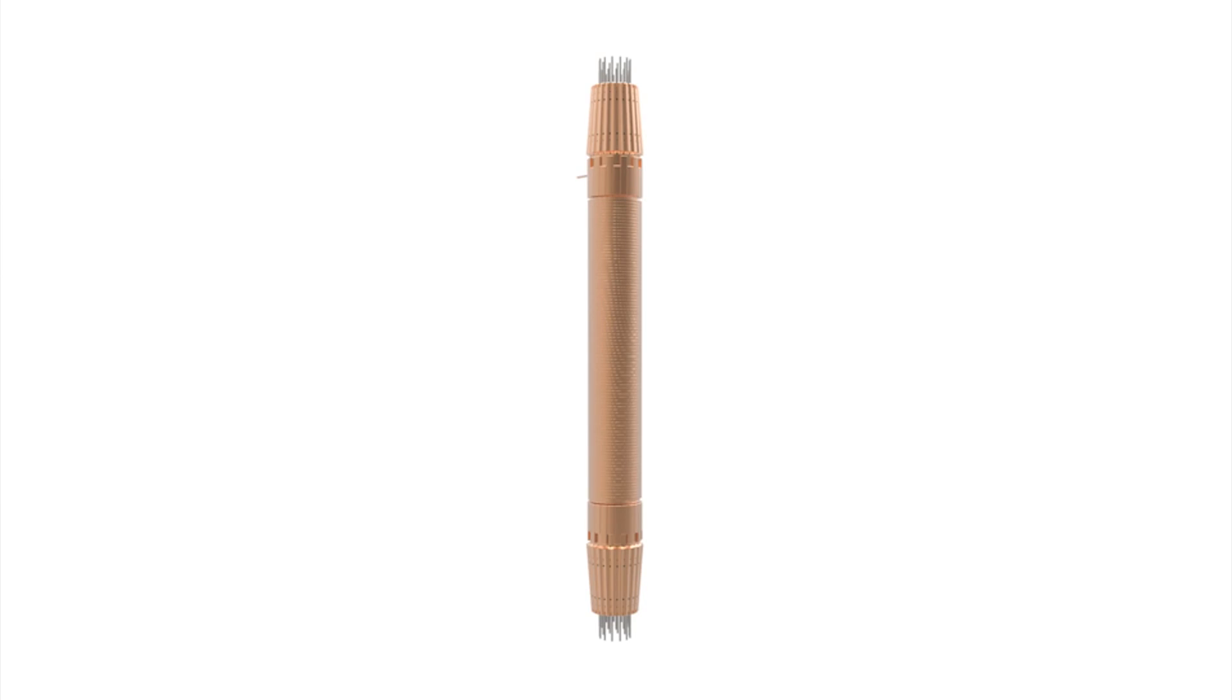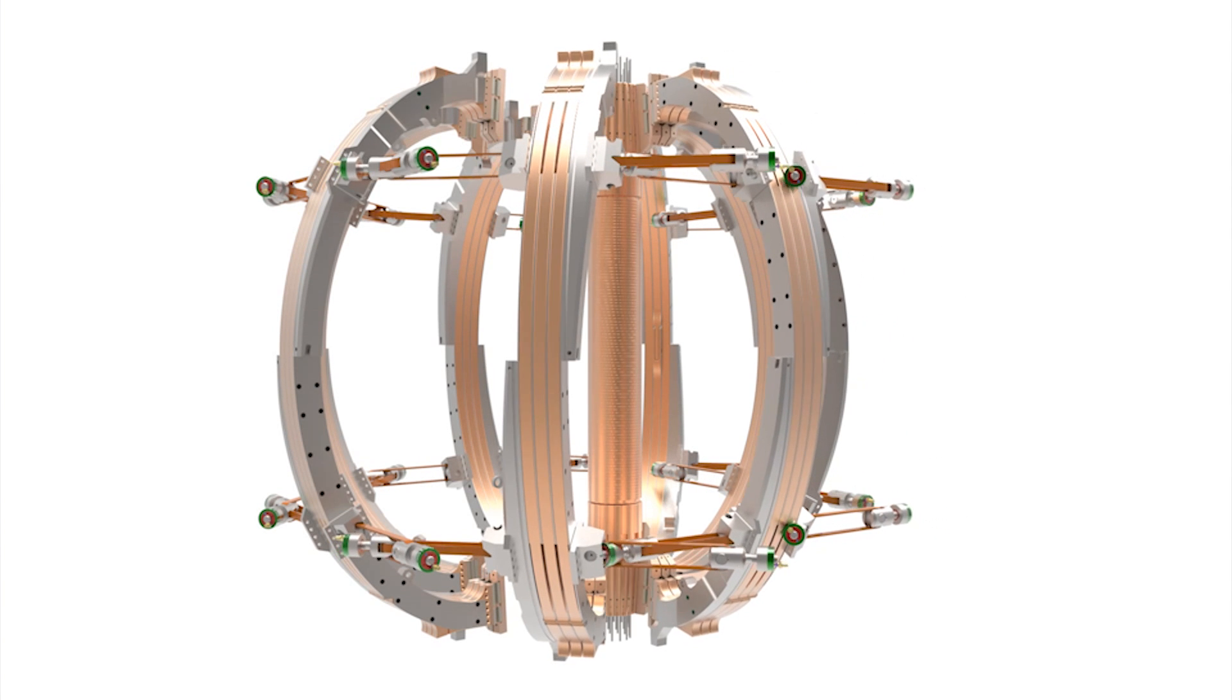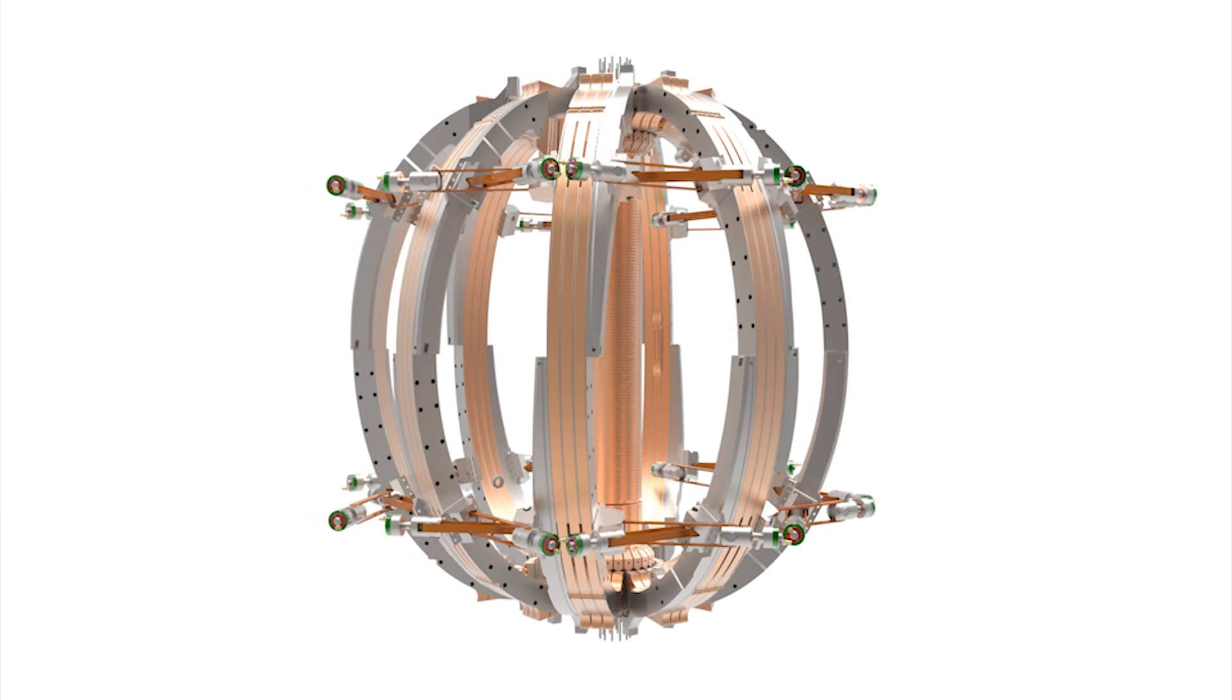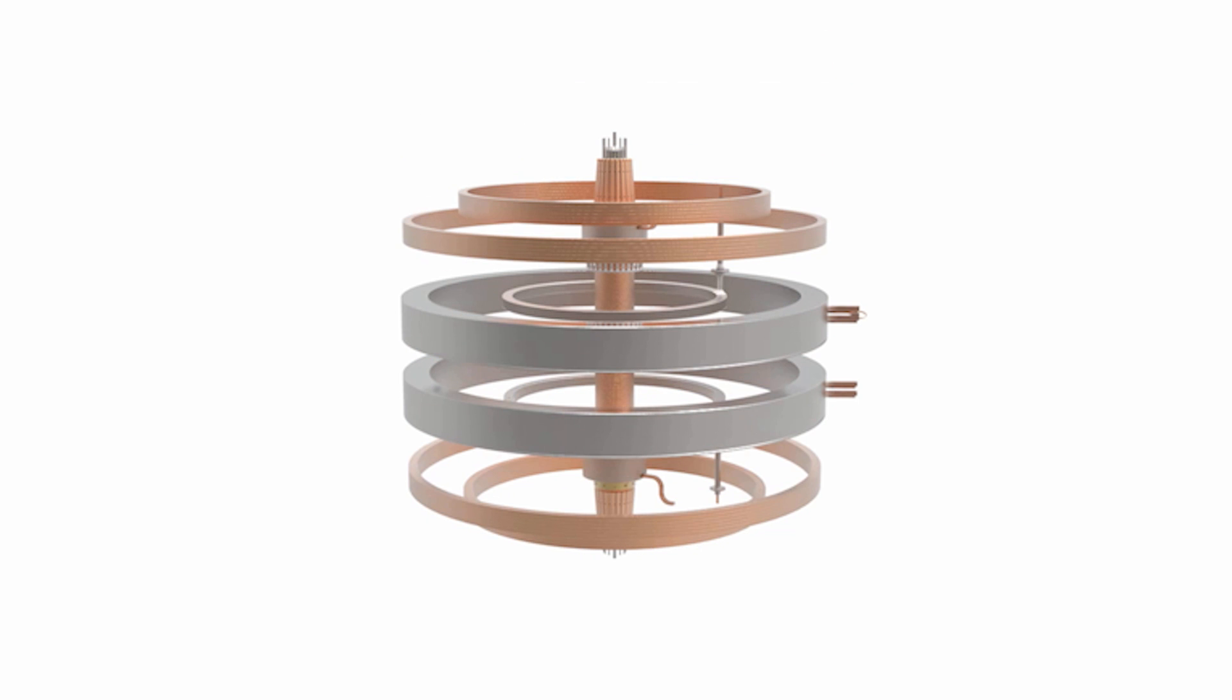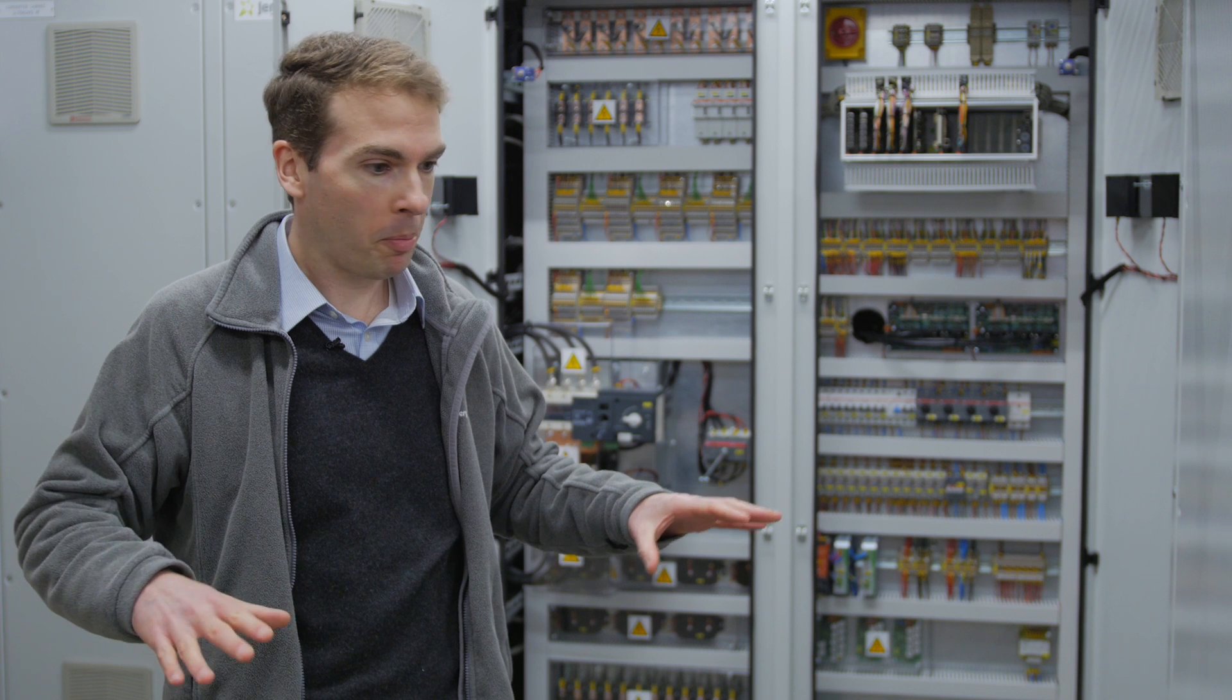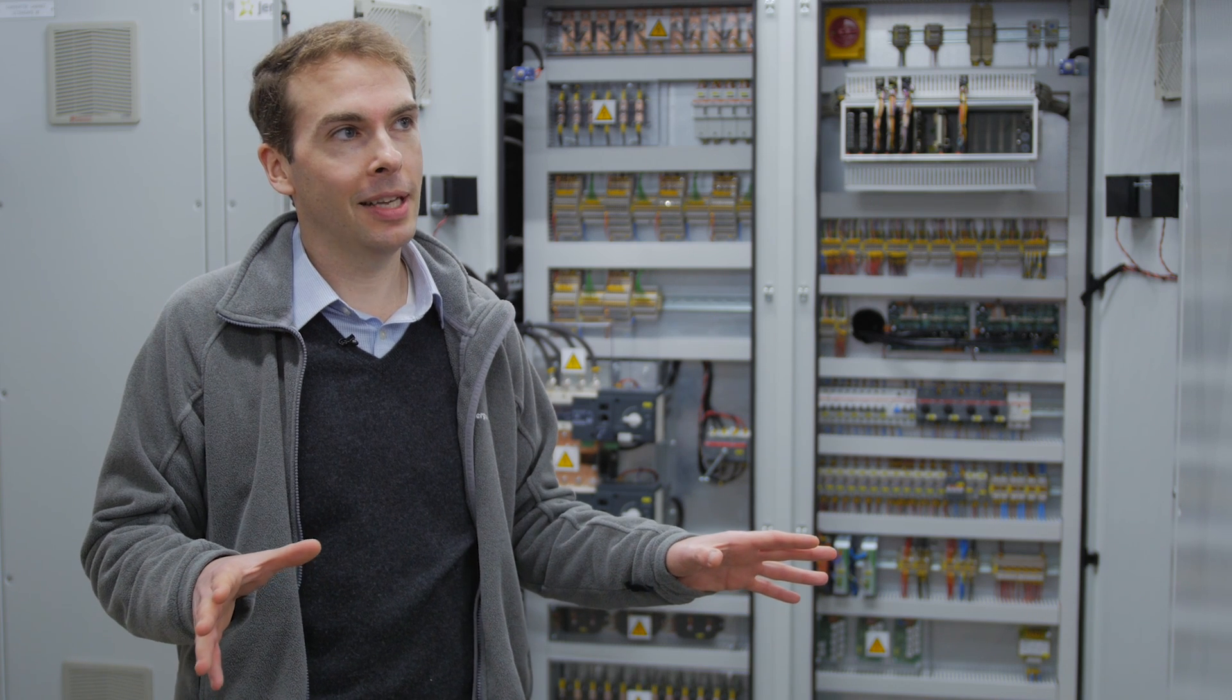The electrical system is part of every system—whether it's these power supplies that are driving the coils to generate the magnetic fields, to the operating of the vacuum pumps, cryogenic systems, the system that generates the puff of hydrogen. All those things, the electrical system sort of permeates through all of them.